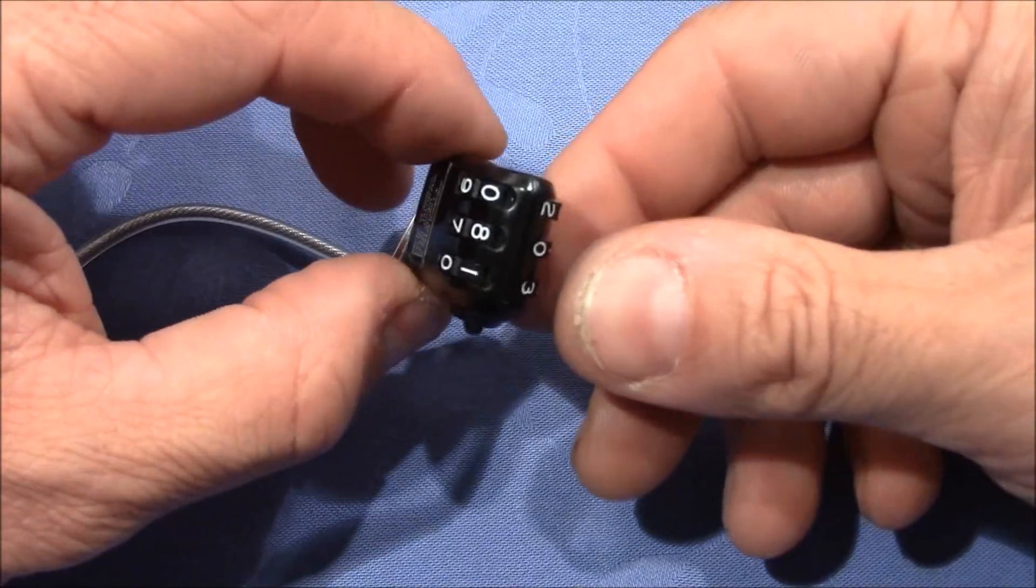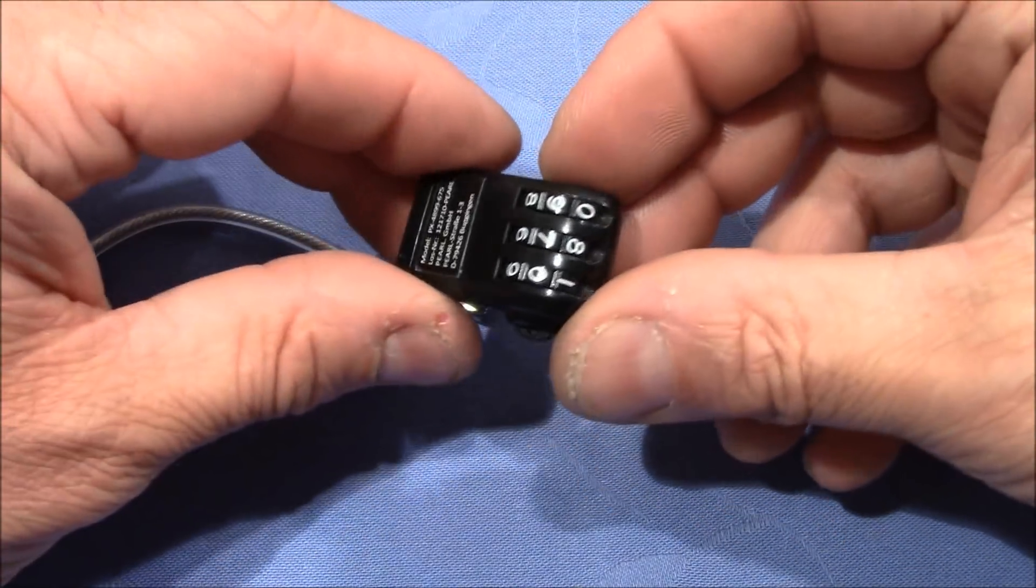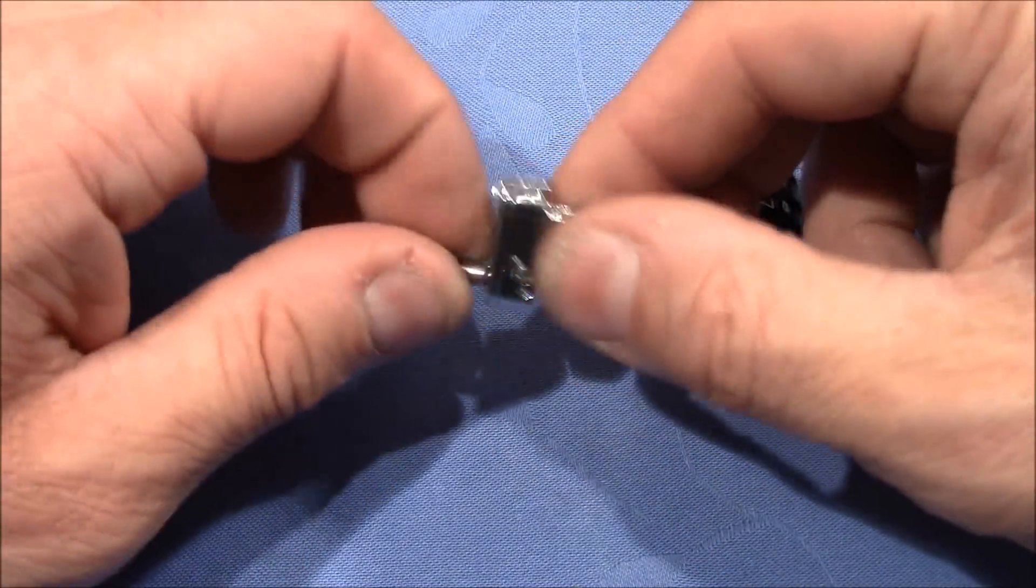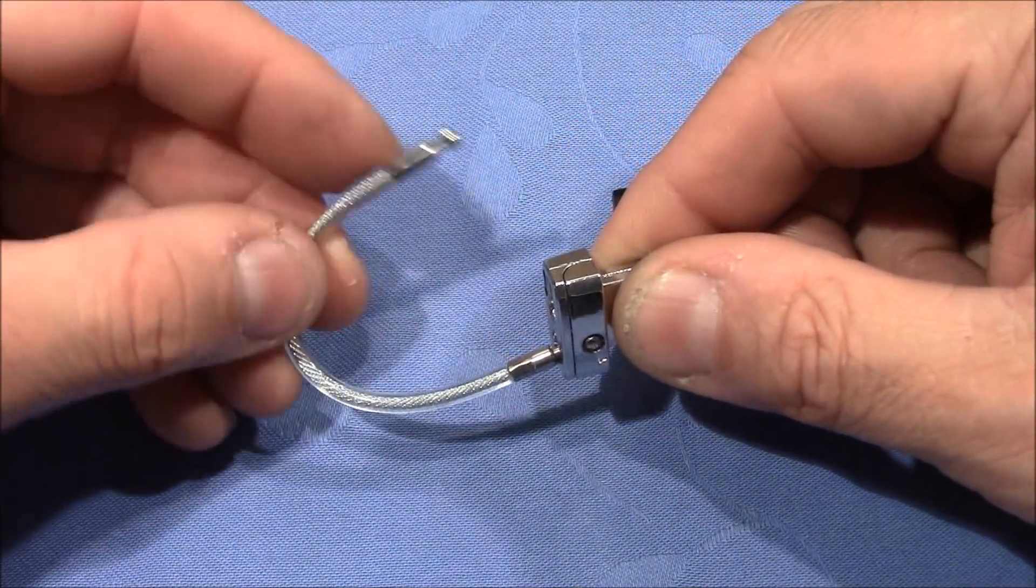The part here is the actual lock with the wheels, and this is the part that can be used as a luggage or as a zipper lock.